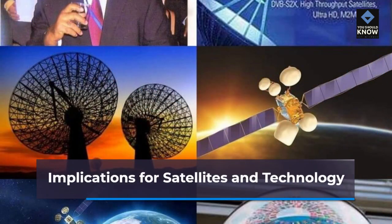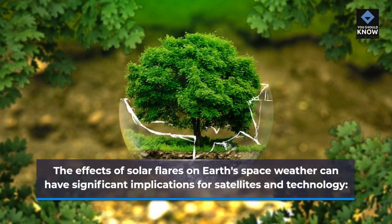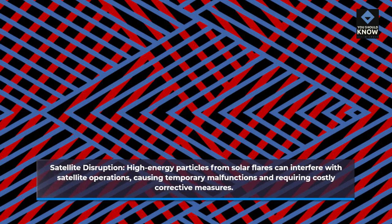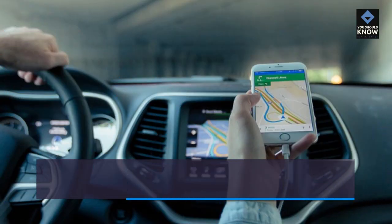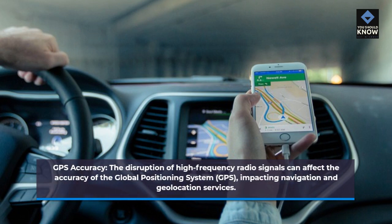The effects of solar flares on Earth's space weather can have significant implications for satellites and technology. High-energy particles from solar flares can interfere with satellite operations, causing temporary malfunctions and requiring costly corrective measures. The disruption of high-frequency radio signals can also affect the accuracy of the Global Positioning System, impacting navigation and geolocation services.